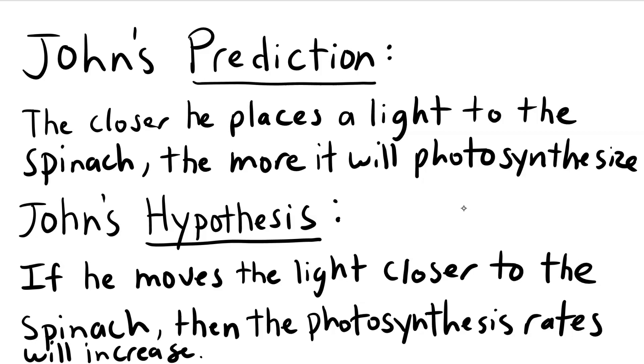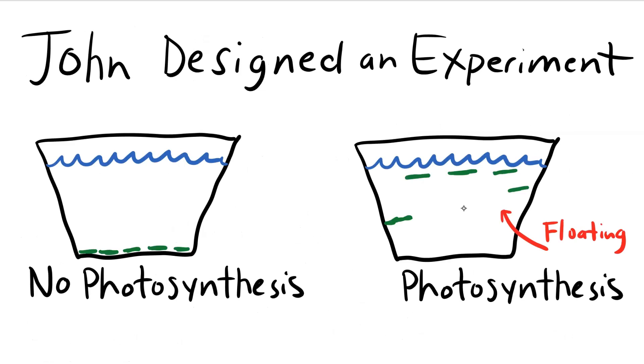John designed the experiment. He cut out little discs of spinach and removed all the oxygen gas from them, leading to their sinking. You can see those sunken leaf discs down here at the bottom of these cups. When we start the experiment, the leaf discs will be at the bottom of the cup. He's removed the oxygen gas from them, and what happens is once photosynthesis starts to occur, the discs will rise.